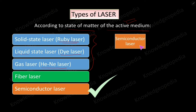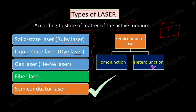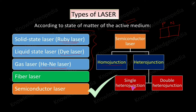The semiconductor laser is made up of a special kind of p-n junction diode, so it is sometimes also called a laser diode. The semiconductor laser is of two types: one is homo junction and the second is hetero junction. In homo junction, both the p-side and n-side are made up of the same kind of material. In hetero junction, the p-side and n-side are made up of different kinds of material. Further, depending on the number of layers, hetero junction is classified into single hetero junction and double hetero junction.